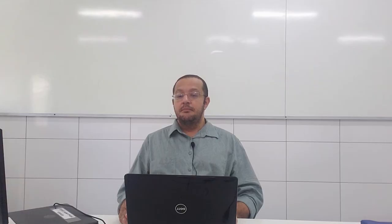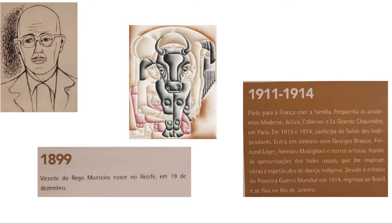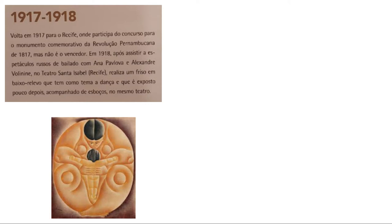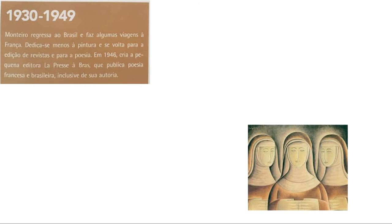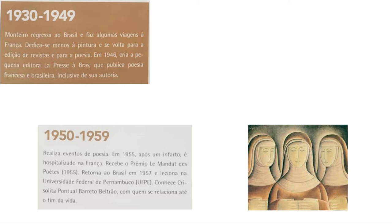Na sequência, nós vamos falar de um pintor muito eclético: Vicente do Rego Monteiro. Ele tem um ecletismo a tal ponto que você pode colocar duas telas dele e jurar que são de pintores diferentes. Nesta sequência que iremos mostrar, foi um trabalho que ele fez para um livro que trabalhava lendas e folclore da Amazônia.